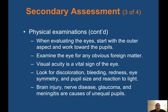When evaluating the eyes, start with the outer aspect and work toward the pupils. Examine the eyes for any obvious foreign matter. Visual acuity is a vital sign of the eye. Look for discoloration, bleeding, redness, eye symmetry, and pupil size and reaction to light. Brain injury, nerve disease, glaucoma, and meningitis are causes of unequal pupils.